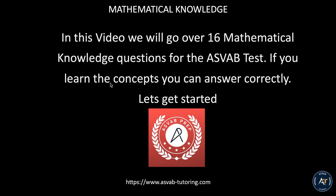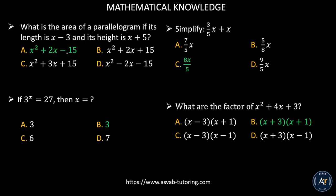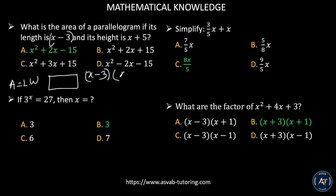The first problem is finding the area of a parallelogram if its length is x minus 3 and its height is x plus 5. To find the area of a rectangle, the formula is: area equals length times width. So let's multiply those two sides — that gives us (x minus 3) times (x plus 5). Using the FOIL method, that gives us x squared plus 5x minus 3x minus 15.